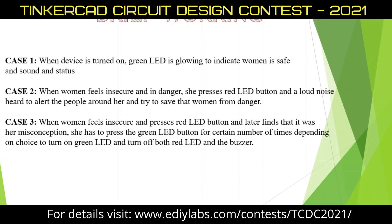In Case 3, the woman feels insecure and presses the red LED button, but later finds out it was a misconception. She then presses the green LED button a fixed number of times — for example, four times — to turn on the green LED and turn off both the red LED and buzzer. This confirms she is safe, and an SMS is sent to the mobile numbers of both parents and friends.